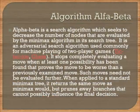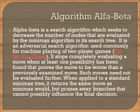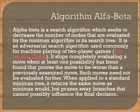Alpha-Beta is a search algorithm which seeks to decrease the number of nodes evaluated by the Minimax algorithm in its search tree. It is an adversarial search algorithm used commonly for machine playing of two-player games such as tic-tac-toe and chess. It stops evaluating a move when at least one possibility has been found that proves the move to be worse than a previously examined move. When applied to a standard Minimax tree, it returns the same move as Minimax would, but prunes away branches that cannot possibly influence the final decision.